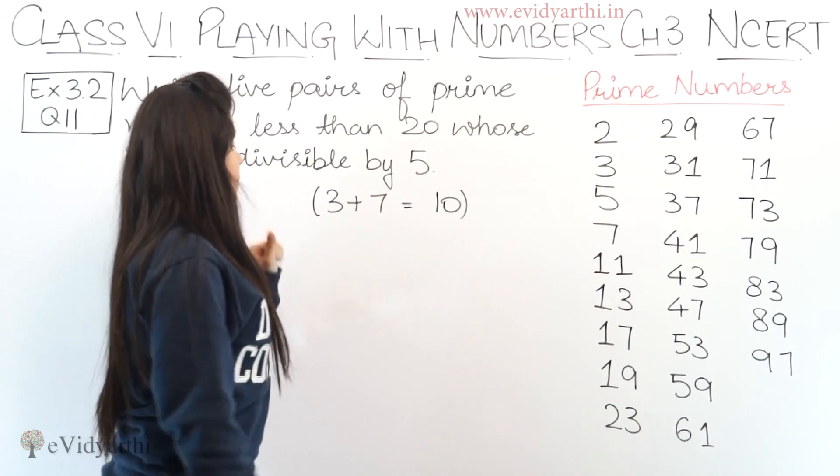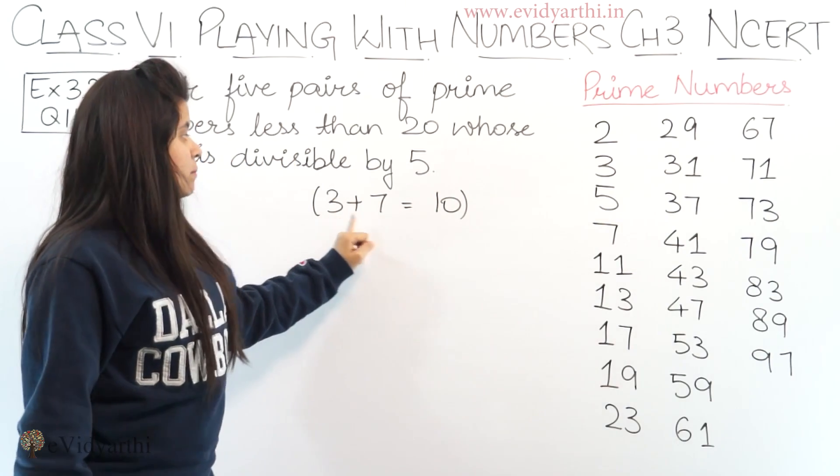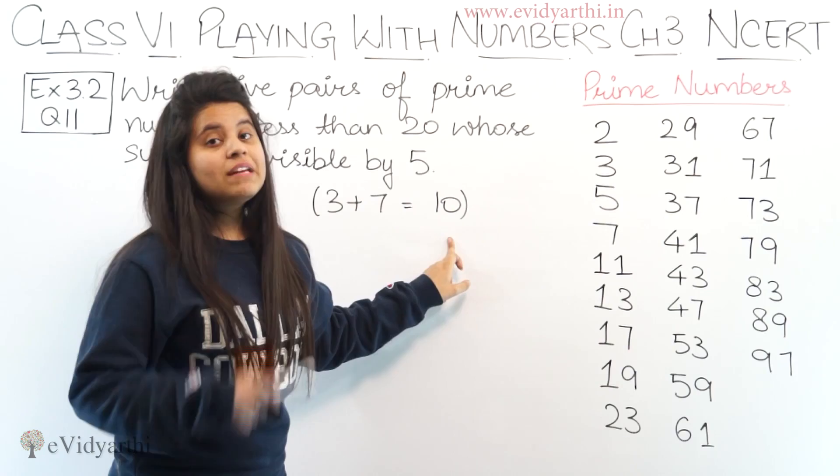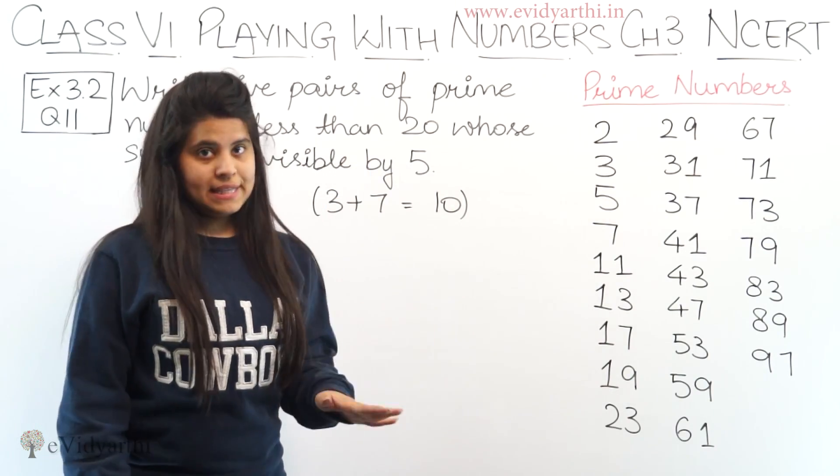Like for example, here we have an example given: 3 plus 7 equals to 10. 3 is a prime number, 7 is a prime number. When we add them we get 10, and 10 comes in the 5 times table. Similarly, you have to write 5 more examples.